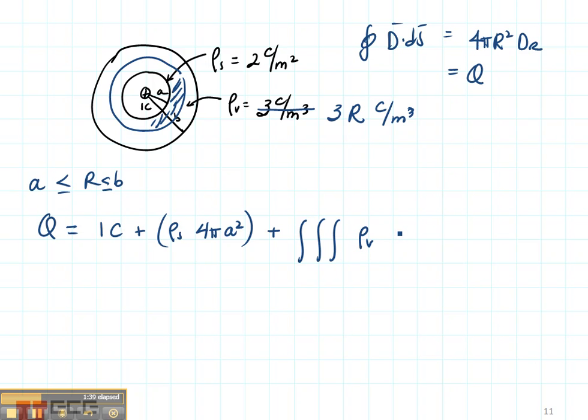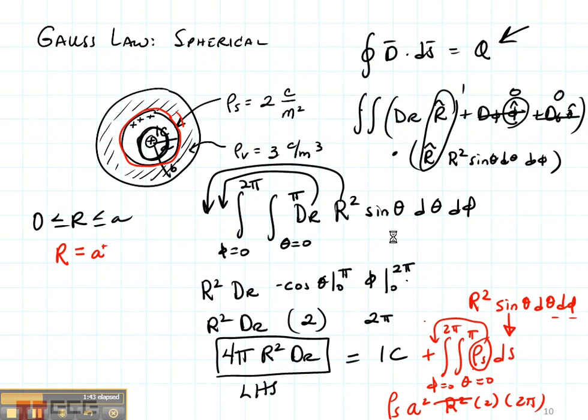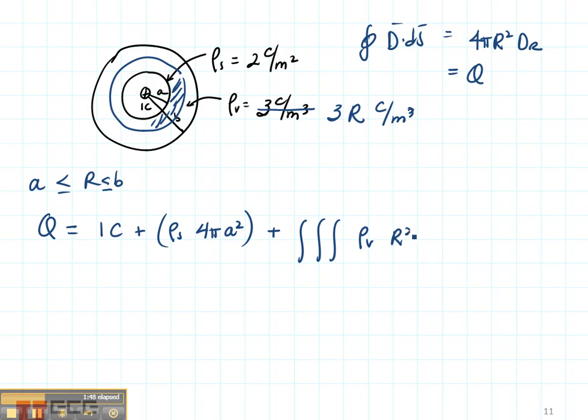And if you look at table 3-1, dV is R² sine(θ) dR dθ dφ.